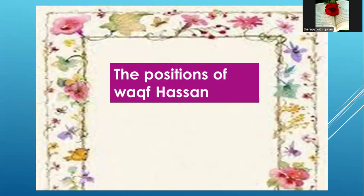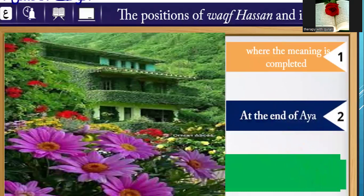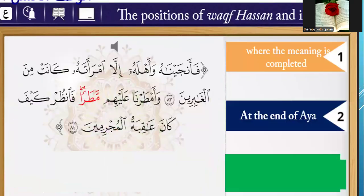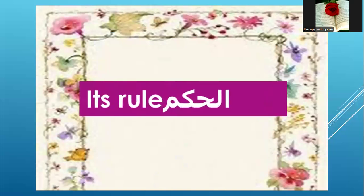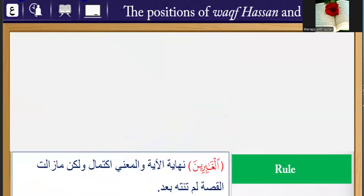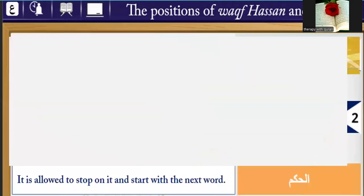The positions of Wakfa Hasan — Mawadi al-Wakfa Hasan. Number one: where the meaning is completed. Number two: at the end of an ayah. Example: Fa'amjaynaahu wa ahlahu wa illa amra'atahu kaanat min al-Ghabirin wa amparna alayhim wa tarah. Al-Ghabirin is at the end of the ayah, and the meaning is already complete — we can stop here. But the story continues; it's not finished yet. It is allowed to stop here and start with the next word.